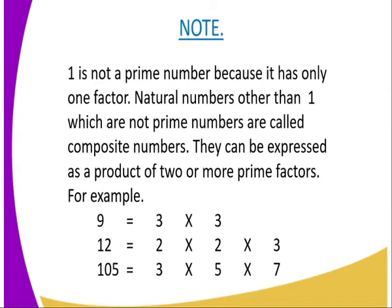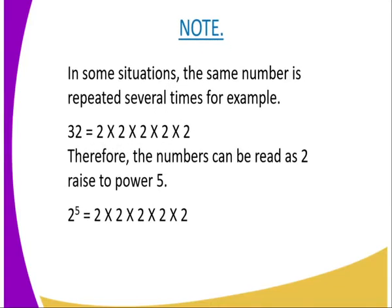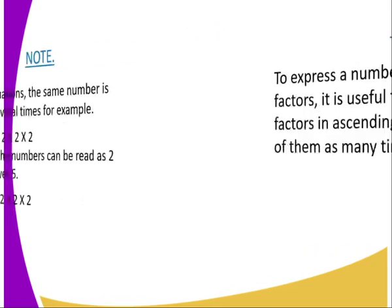Note, 1 is not a prime number because it has only one factor. In some situations, the same number is repeated several times. For example, we can have 32 where its factors are 2 by 2 by 2 by 2 by 2, that is 2, 5 times. Therefore, the numbers can be written as 2 to the power 5 instead of repeating the numbers themselves.